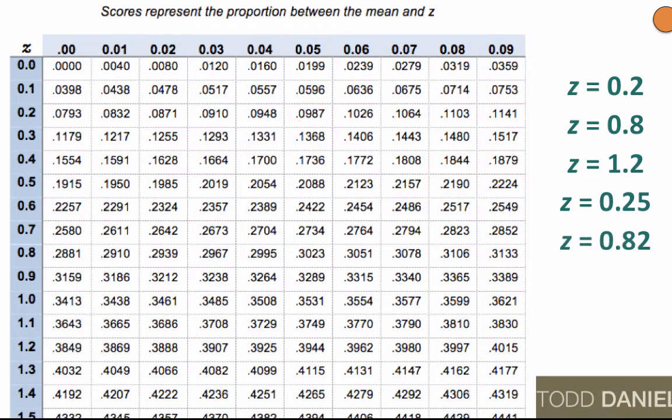So what is the proportion of scores between the mean and a z of 0.82? As before, we start with the 0.8, then move to the column labeled 0.02. The value is 0.2939. Let's try some other examples.